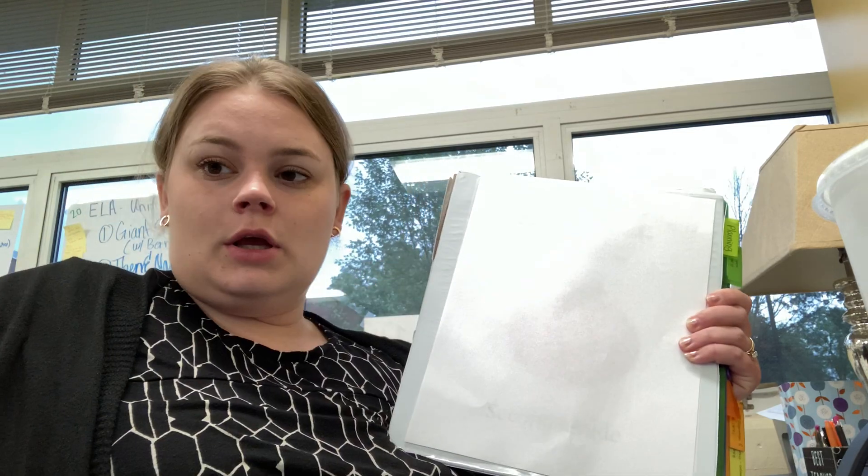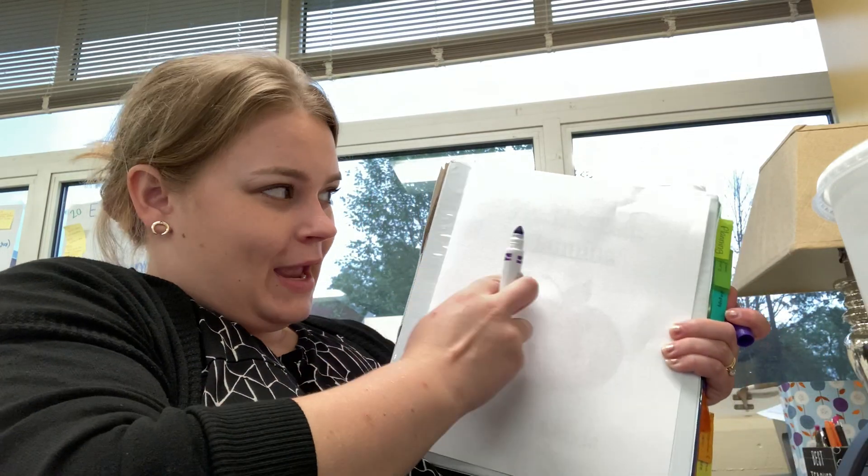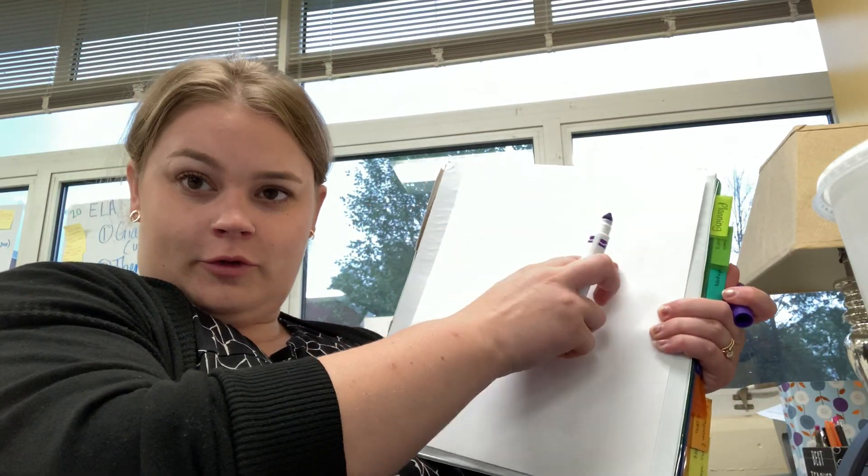To make a T-chart, you start with a blank piece of paper. If it has lines on it, that's okay. Just try to pay attention to the lines so that it's neat for you.